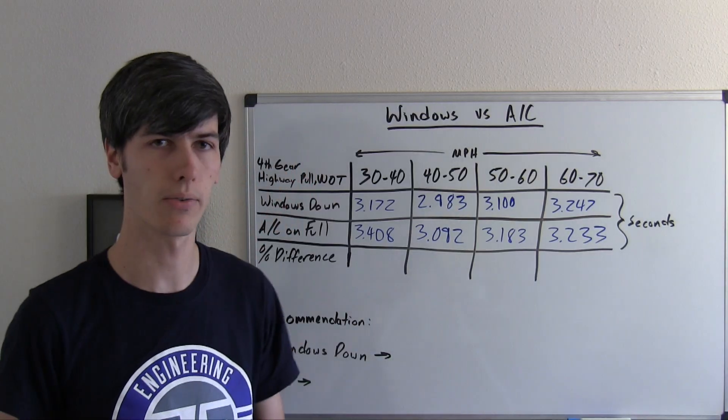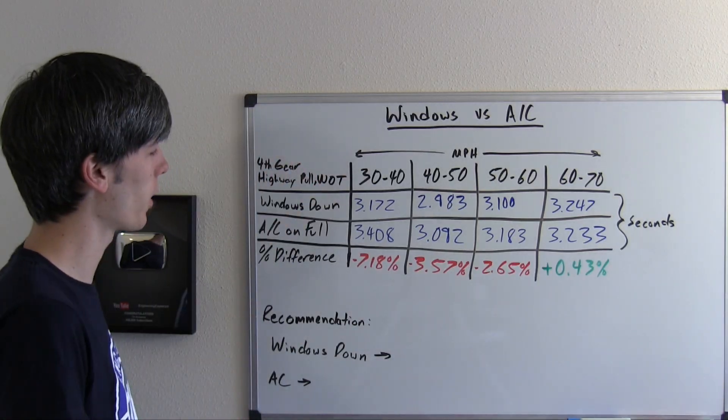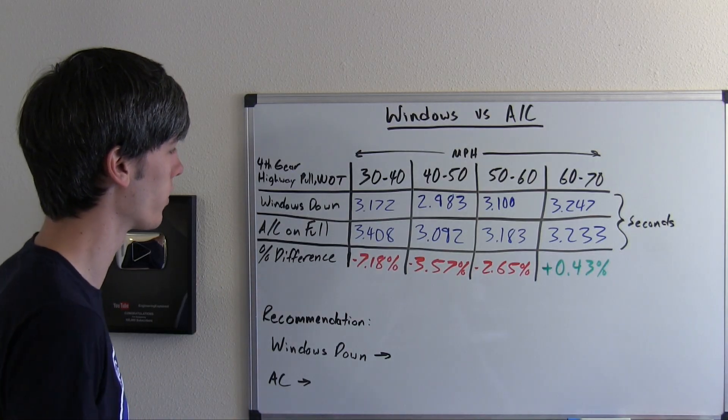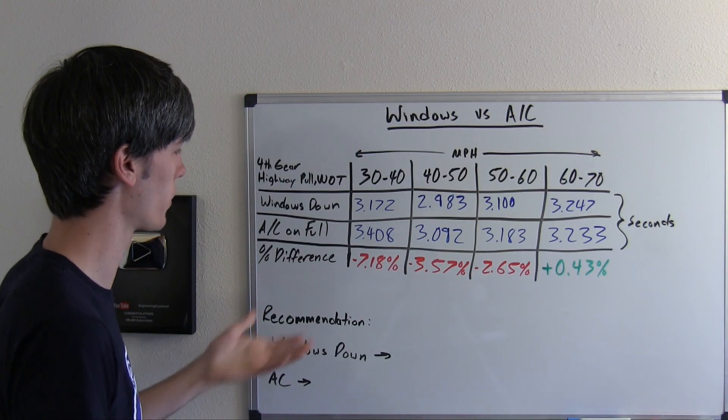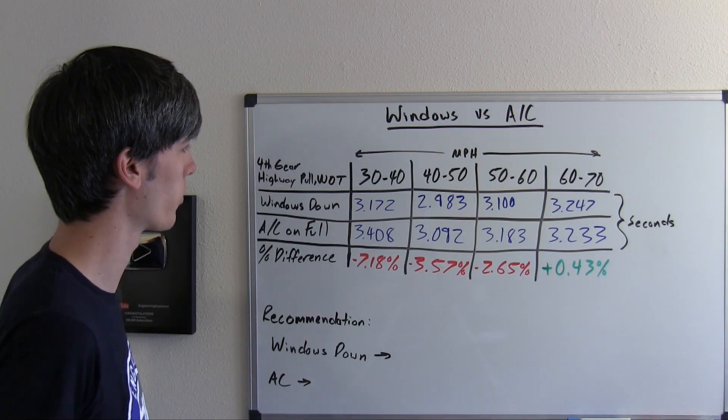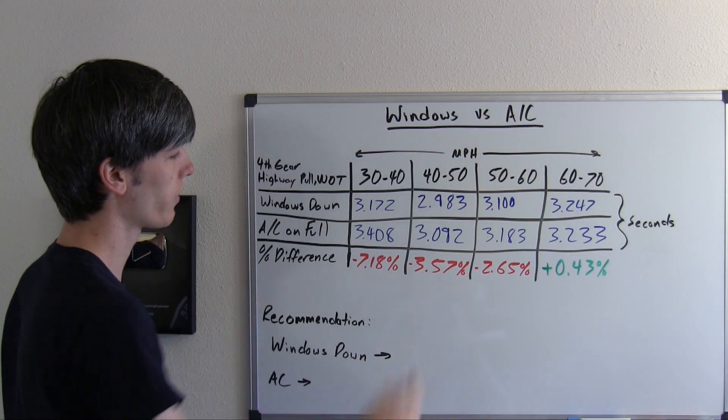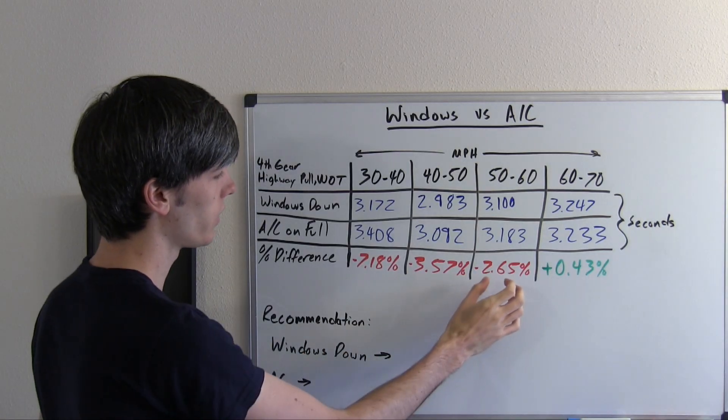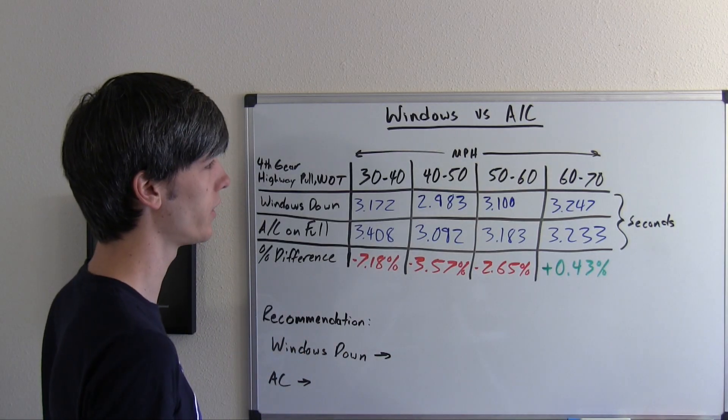Let's look at the percent differences. From 30 to 40 miles per hour, the AC is 7.18% slower than with the windows down. So significantly less efficient using the AC from 30 to 40 miles per hour. From 40 to 50, 3.57% slower with the AC on. From 50 to 60, 2.65% slower with AC on.